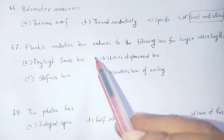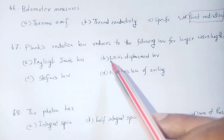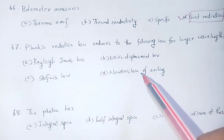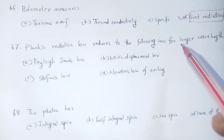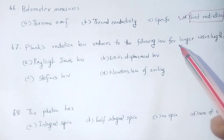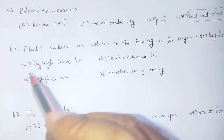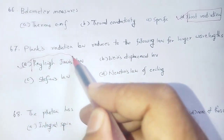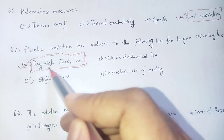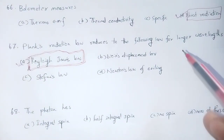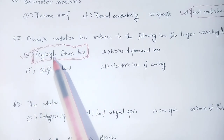Question 65: Planck's radiation law reduces to the following law for longer wavelength. The options are Rayleigh-Jeans law, Wien's displacement law, Stefan's law, and Newton's law of cooling. Planck's radiation law reduces to Rayleigh-Jeans law for longer wavelengths — this is related to the ultraviolet catastrophe. Option number A: Rayleigh-Jeans law.